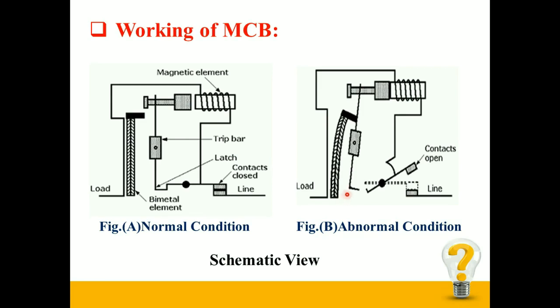During the short circuit condition, heavy current passes through the solenoid, which is also called the magnetic element, and this forces the plunger towards the latch. Due to this, the mechanical latch is released and the contacts are separated, which prevents damage to equipment from the heavy short circuit condition.